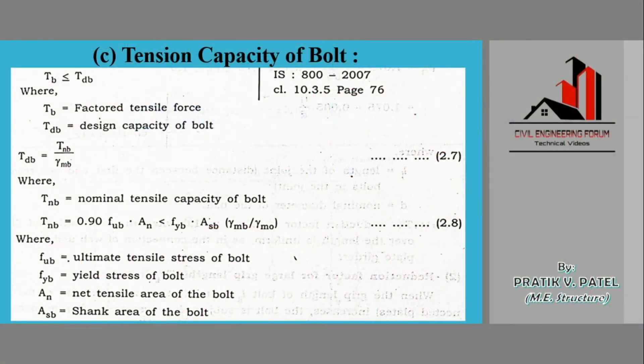Hello friends, welcome to the 15th part of the topic 'Connections in a Steel Structure,' where we wanted to find the number of bolts required for any joint. For that, we have the formula: load on any member divided by bolt value.